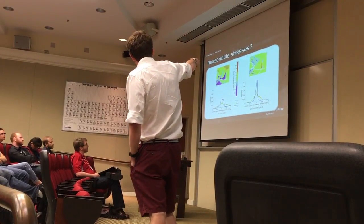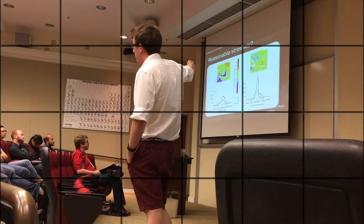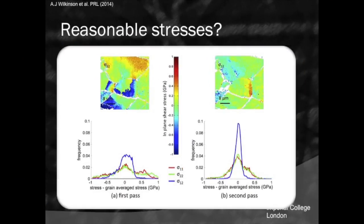Here is a demonstration that the remapping really works on a piece of copper. Within an elastic grain we shouldn't see sharp gradients in the elastic field. Without remapping, we see erroneously large stress variations. With remapping, the variations become much smoother within the grain, only getting large near grain boundaries where issues related to equilibrium and compatibility arise. We recover a much more reasonable range of stresses within the grain.